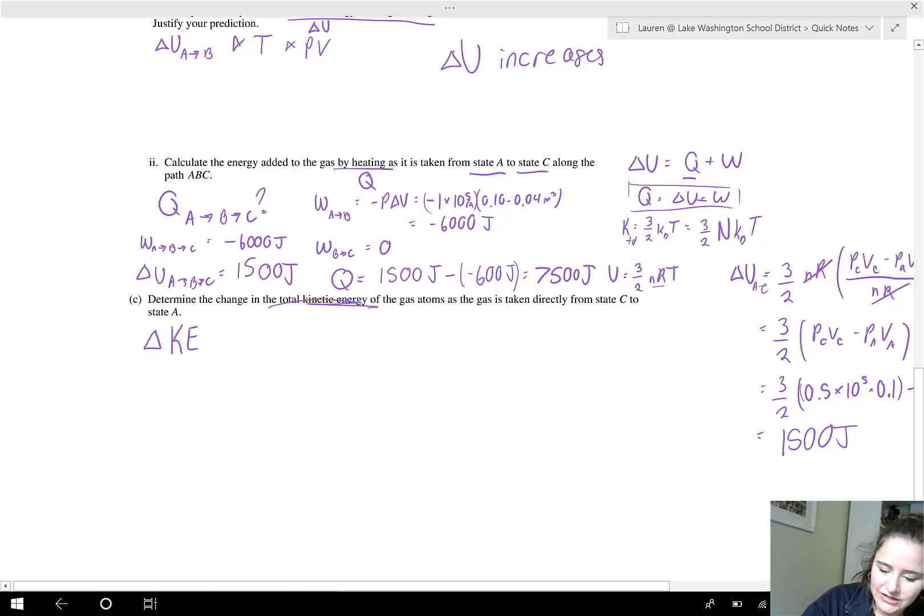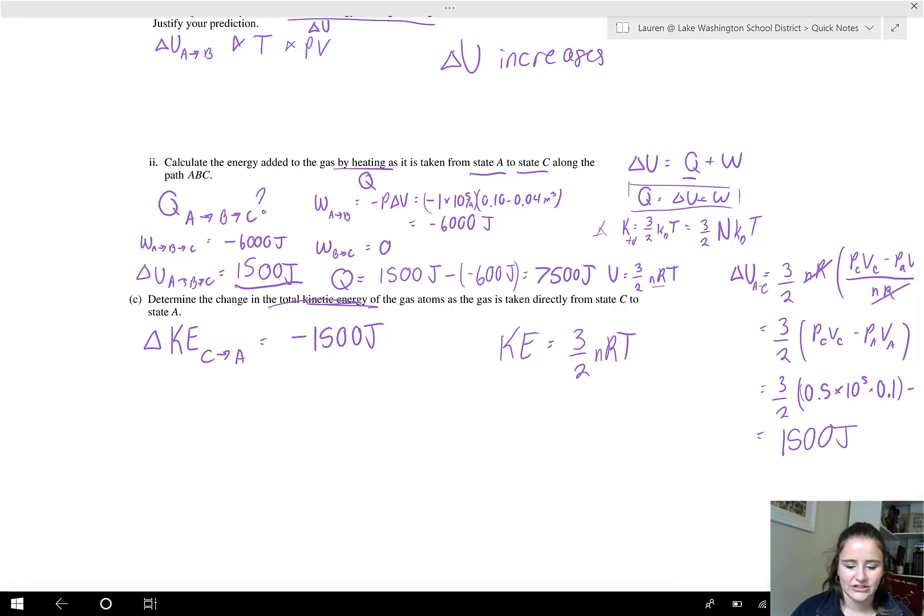So the change in the kinetic energy from state C to state A. Now, didn't we just use the kinetic energy to calculate it from A to C? Yes. Yes, we did. So if it's from A to C, now we're going from C to A. It's just the opposite. If the change in energy was 1,500 joules to get it to there, to get it back, it will be negative 1,500 joules. And that's it. That is the answer. Another way you could have done it is you could have gone back to that equation and done that the total kinetic energy is 3 halves NRT and calculated it all again. But you're going to get the same answer. You could find that kinetic energy at each of those two points and subtract them. You'll get the same answer.